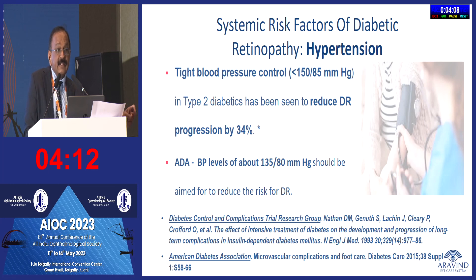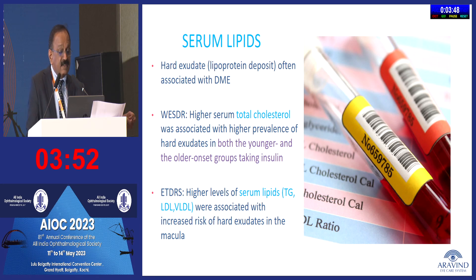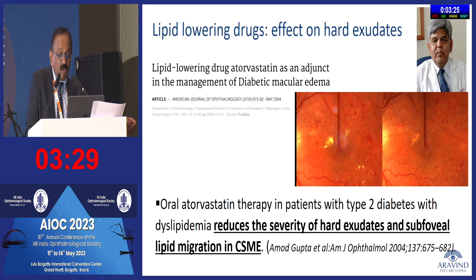Blood pressure control plays a major role in diabetic retinopathy progression — better control yields better outcomes. Serum lipids are also an important risk factor: high serum total cholesterol is associated with a higher prevalence of hard exudates in both younger and older onset diabetic patients, and higher serum lipid levels are associated with increased risk of hard exudates in the macula.